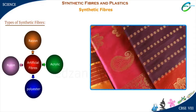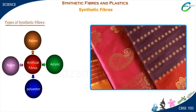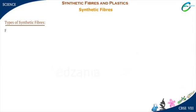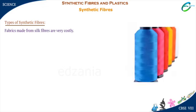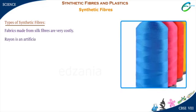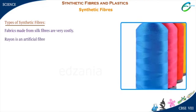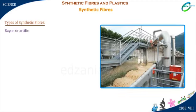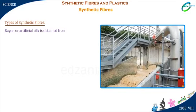Look at these silk sarees. Their beautiful texture just fascinates everyone. But fabrics made from silk fibers are very costly. So scientists prepared an artificial fiber called rayon having properties similar to that of silk. Rayon, or artificial silk, is obtained from wood pulp by chemical treatment.